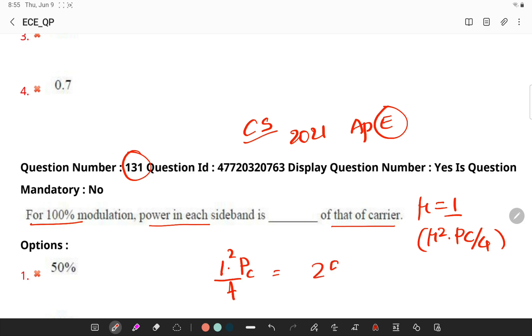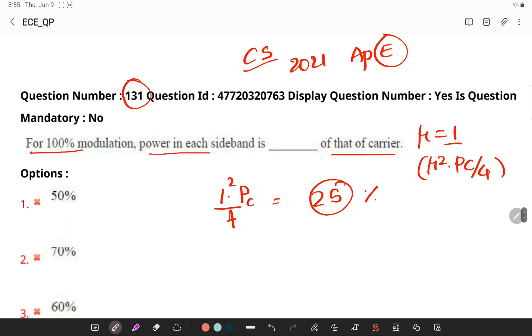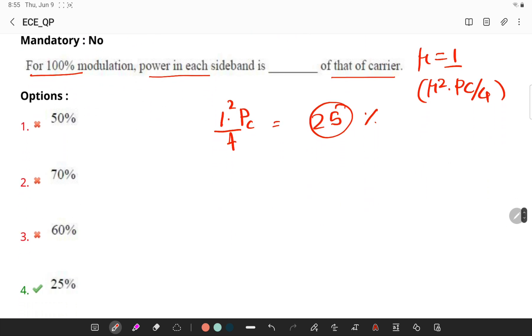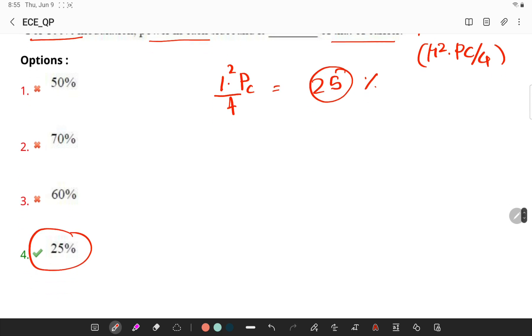Which is nothing but 25. 1 by 4 is 0.25, which means 25% of the power. So for 100% modulation power, in each sideband is 25% that of the carrier power.